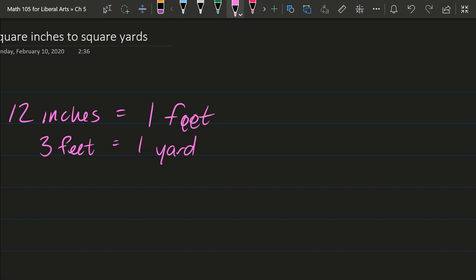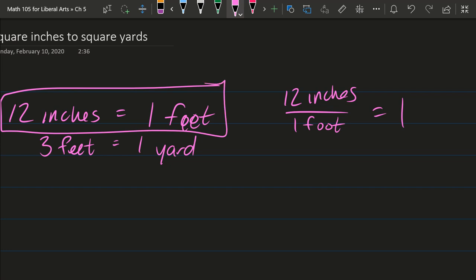So I'm going to take feet, I'm going to divide by one foot. So that's 12 inches divided by one foot equals one. So I just took this equation and I divided by one feet or one foot, and so now I have 12 inches in one foot.